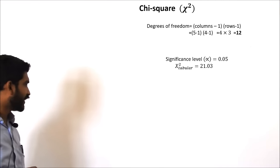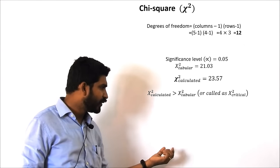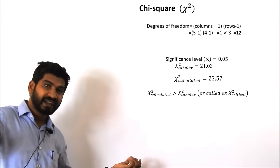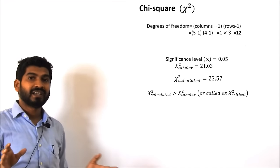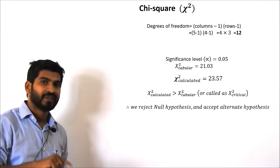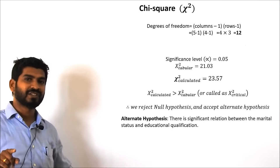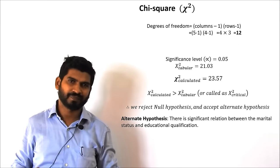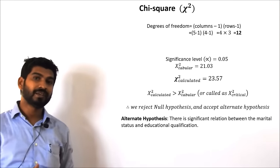Once we get this value, we compare the calculated value and the tabular value. We can see the tabular value is smaller than the calculated value. In chi-square, whenever the calculated value is greater than the tabular or critical value, we state that the null hypothesis is rejected and the alternate hypothesis is accepted. Our alternate hypothesis was that there is a significant relation between the two variables — between the marital status and the level of education. This is how we use the chi-square test to state whether two variables are related or not.